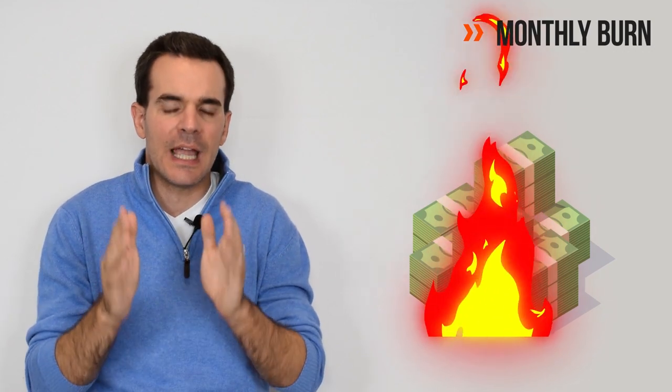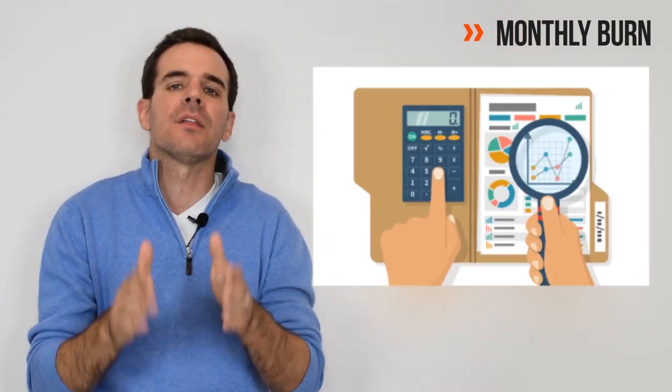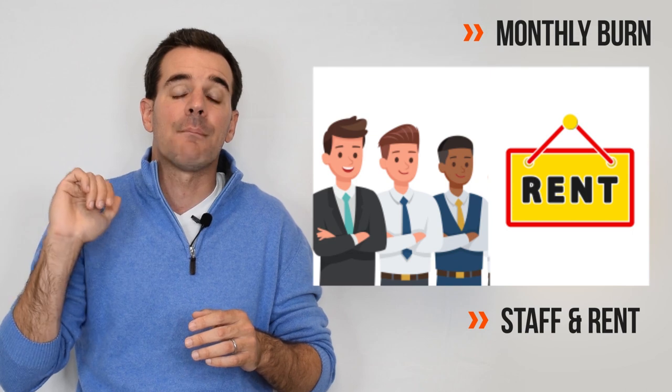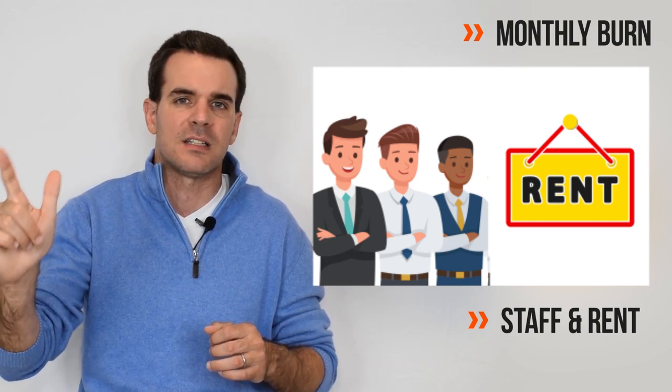First is the key figures that you need to know. On the first hand, what you're going to see is the monthly burn that you have. You need to understand how much cash you're burning every month, meaning how much you're in the red every month that you're operating. For the most part, if you're at an early stage, you're going to be talking about staff and also the rent. Those are the two biggest expenses that you're going to have.